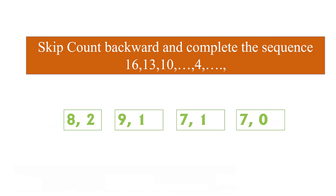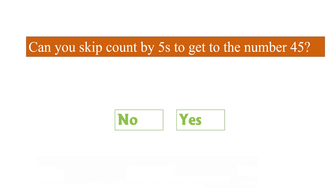We have to skip count backward and fill in the blanks: 16, 13, 10, blank, 4, blank. The difference between consecutive numbers is 3, so we subtract 3 each time. 10−3=7, and 4−3=1. So 7 and 1 go in the blank spaces, which is option 3.